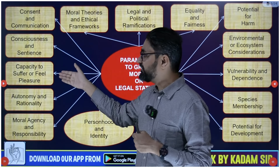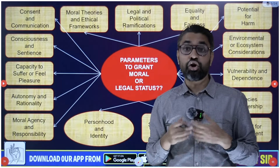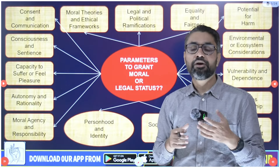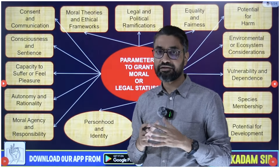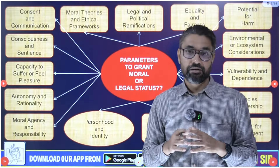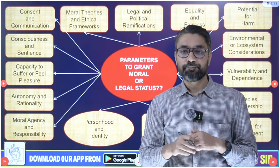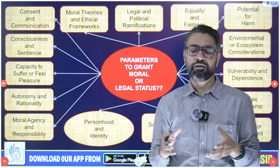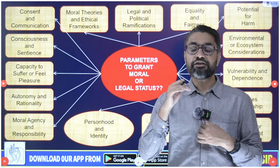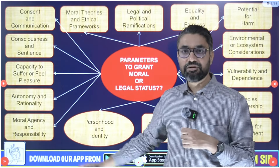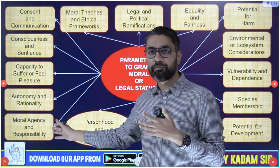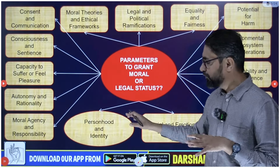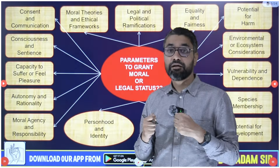The third parameter is autonomy and rationality - whether that entity is autonomous and rational, whether they can think for themselves and experience rational thoughts. The fourth is moral agency and responsibility - are they moral agents, and can we hold them accountable for their actions? For example, a child below 12 years who commits a crime is not considered a criminal, because we have agreed that a child that age cannot understand the moral and ethical complications of their actions.